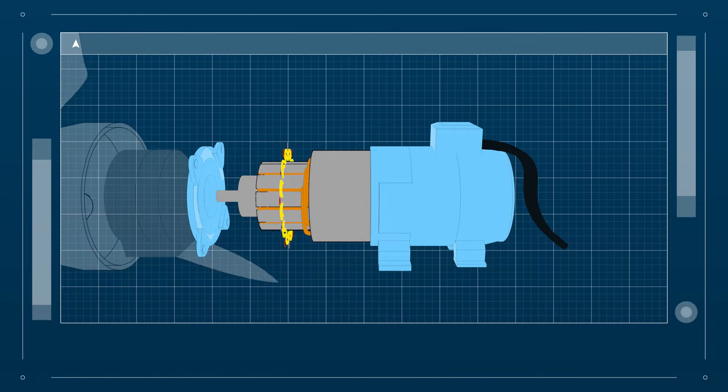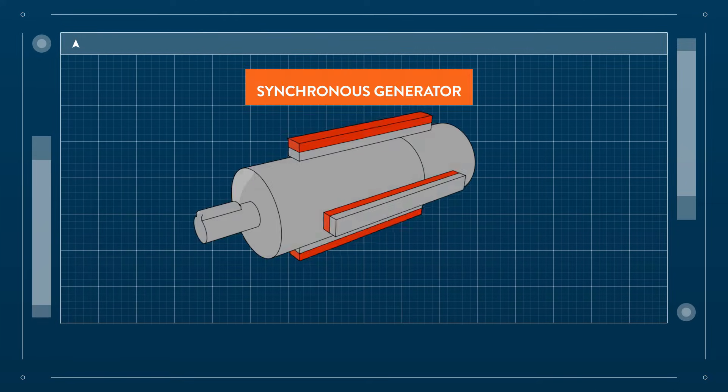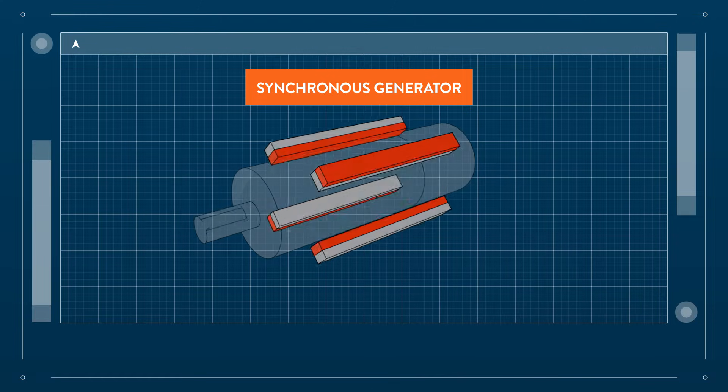However, there are different types of generators. To simplify, we will first consider a synchronous generator with just four magnetic poles.